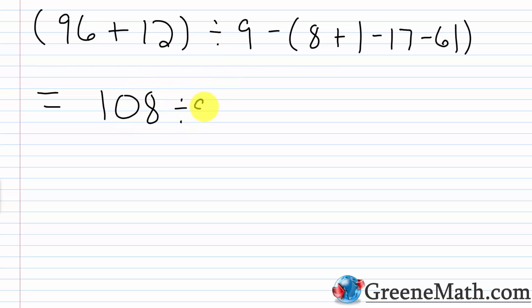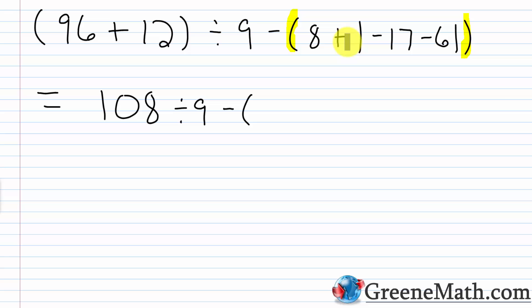Then I have divided by 9, and then minus. I can go ahead and just start working inside of the parentheses here, because that would be my next step. If I look inside the parentheses, I have addition and then I have some absolute value bars. I always want to look for grouping symbols when I get inside of grouping symbols, because I'm reapplying the order of operations. So the absolute value bars would serve as grouping symbols, and we need to figure out what negative 17 minus 6 would be.